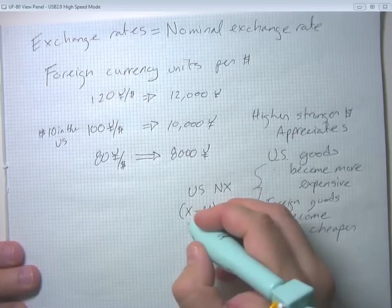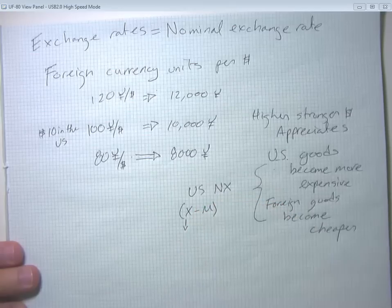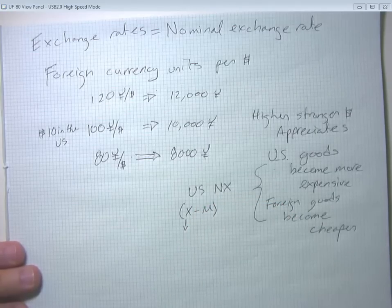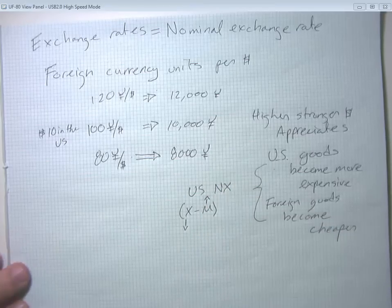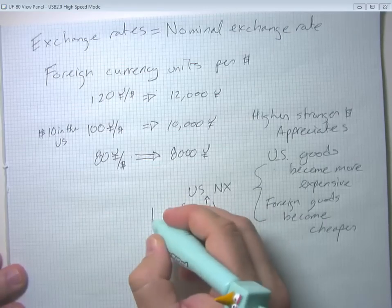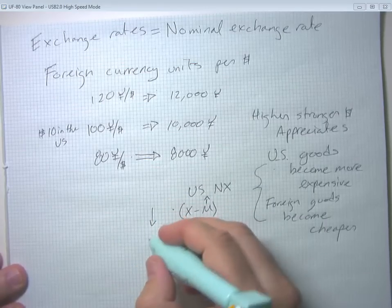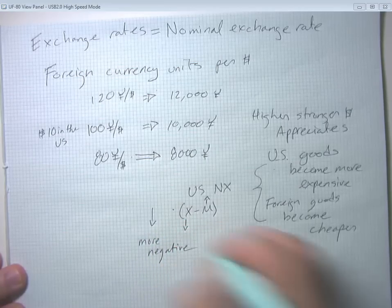Well, if US goods become more expensive, then US exports are going to fall, because foreign buyers don't want as much of them. And if foreign goods become cheaper, then imports are going to rise. So overall, net exports are going to go down. So they're going to become, in the case of the US, more negative, because we're already running a trade deficit.